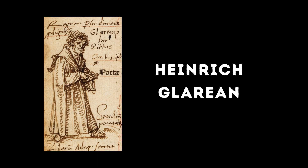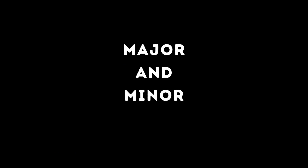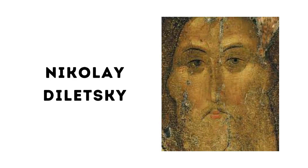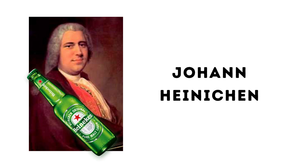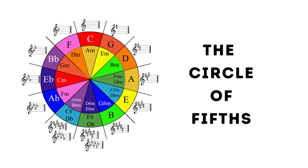Then several centuries later, this guy said there were actually twelve modes, and two of his four additional modes basically represented major and minor keys. Then in 1677, this guy came up with a clever way to modulate keys. And a few decades later, this guy enhanced it and called it the musical circle, which is basically the circle of fifths.